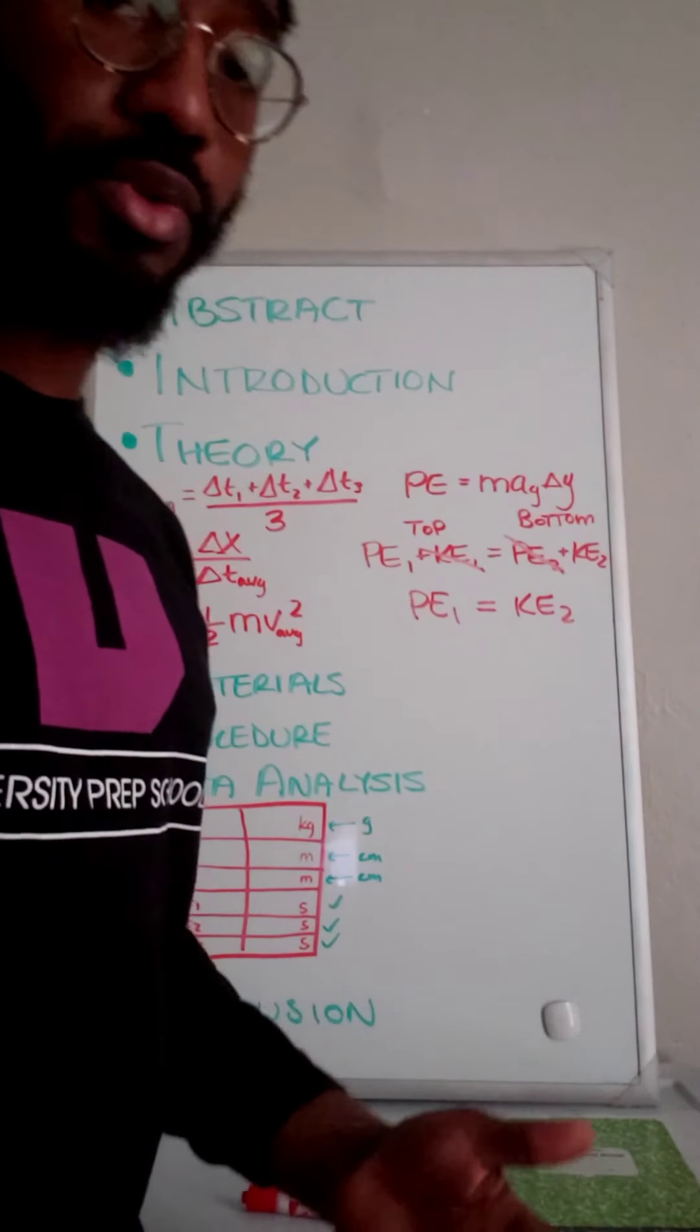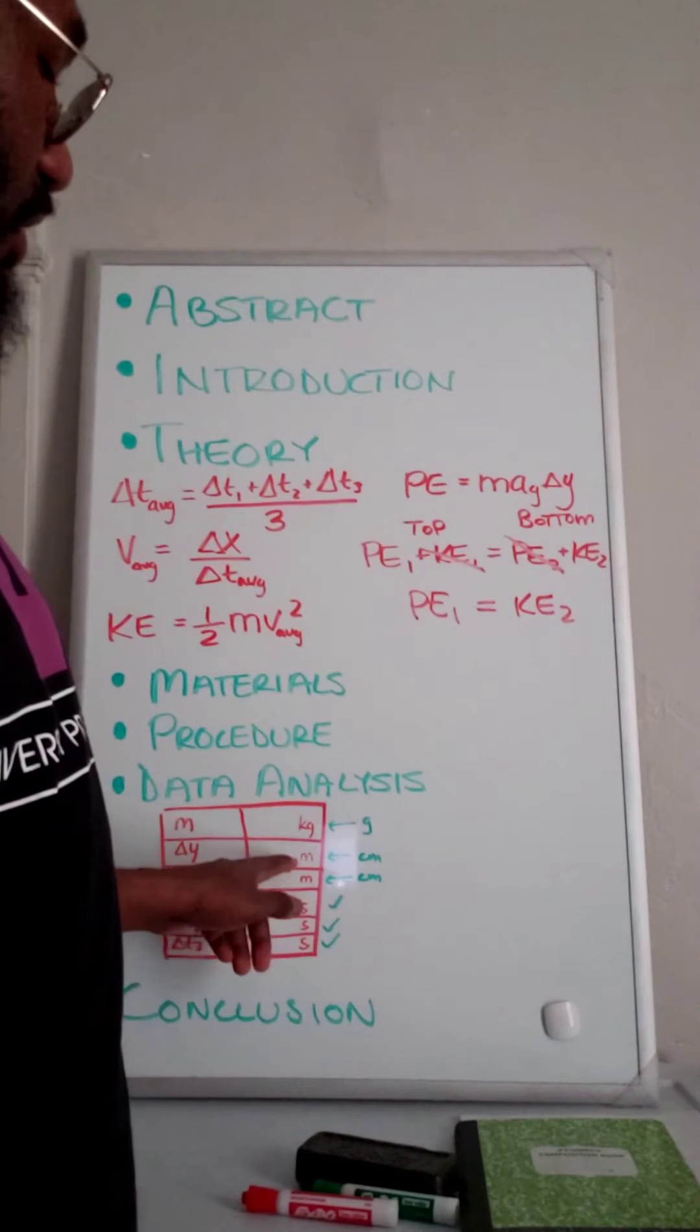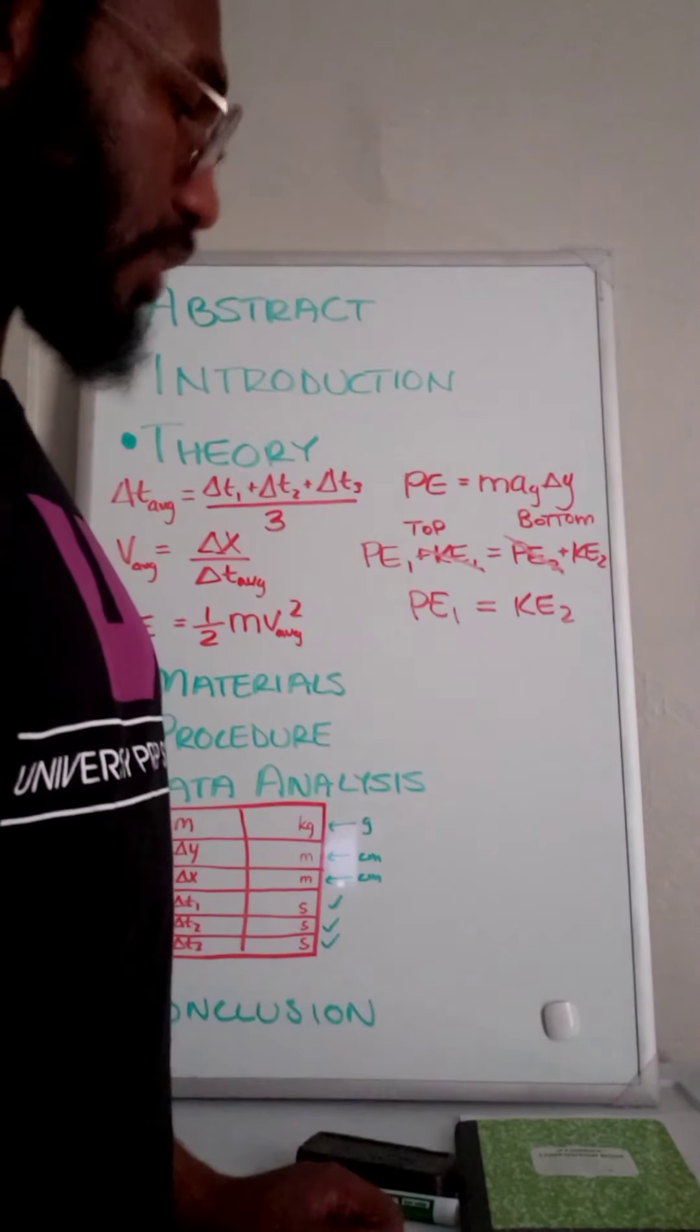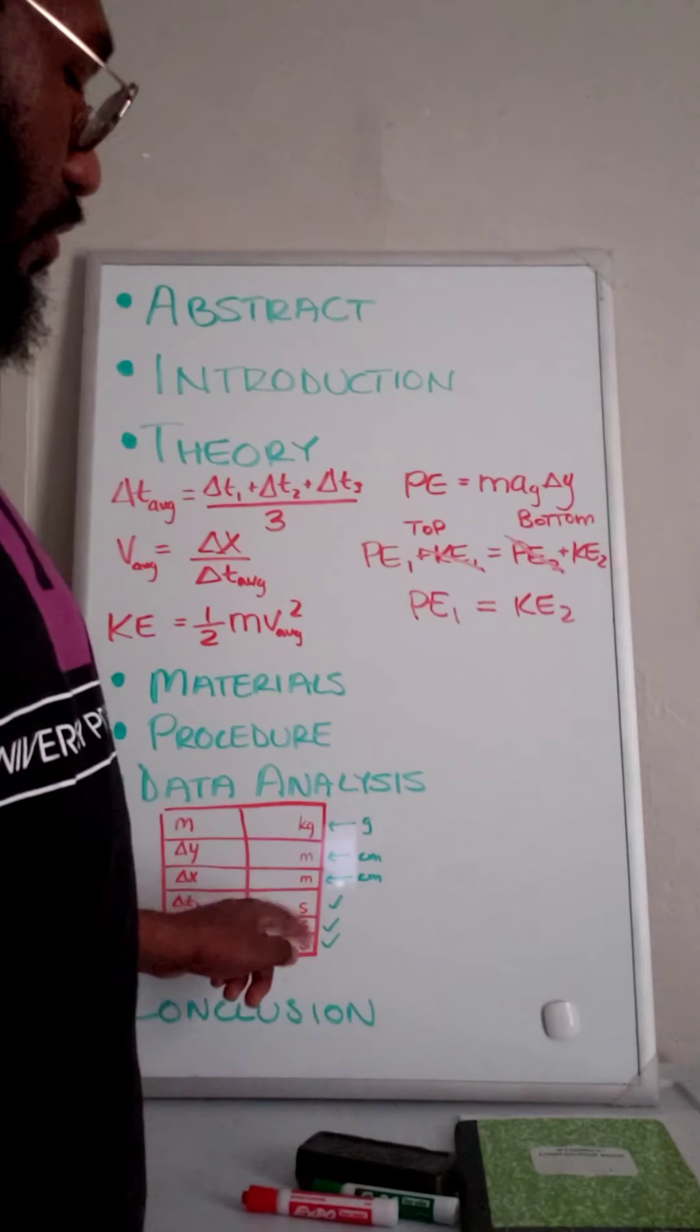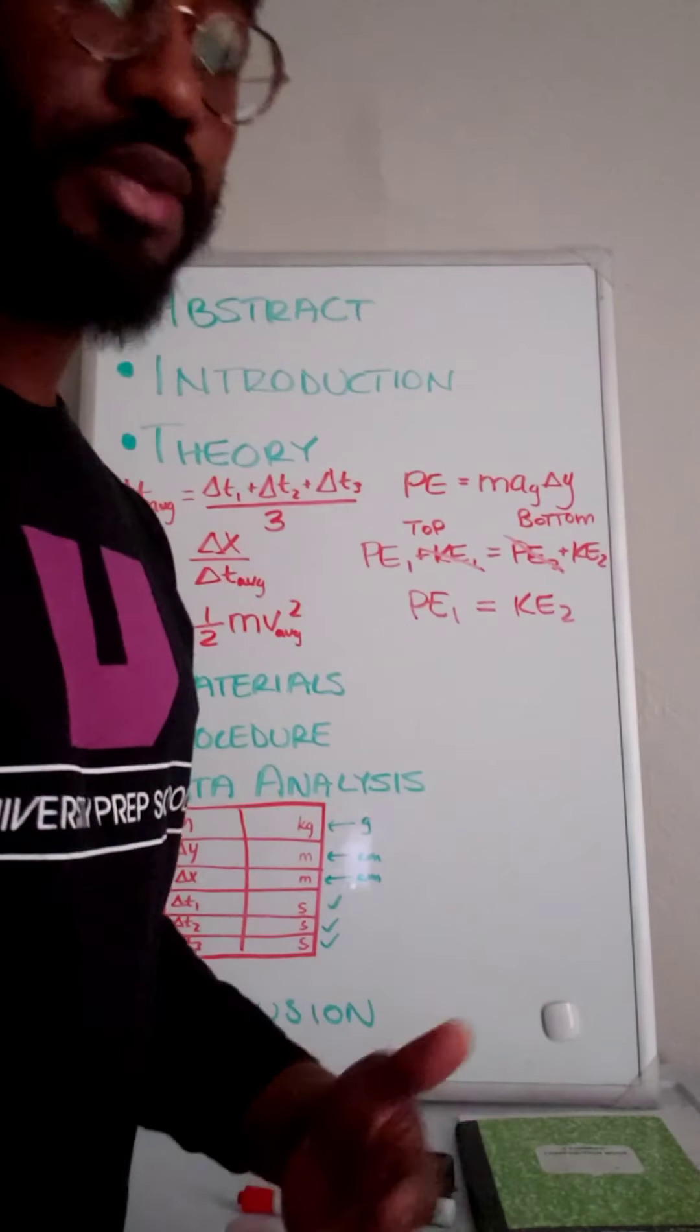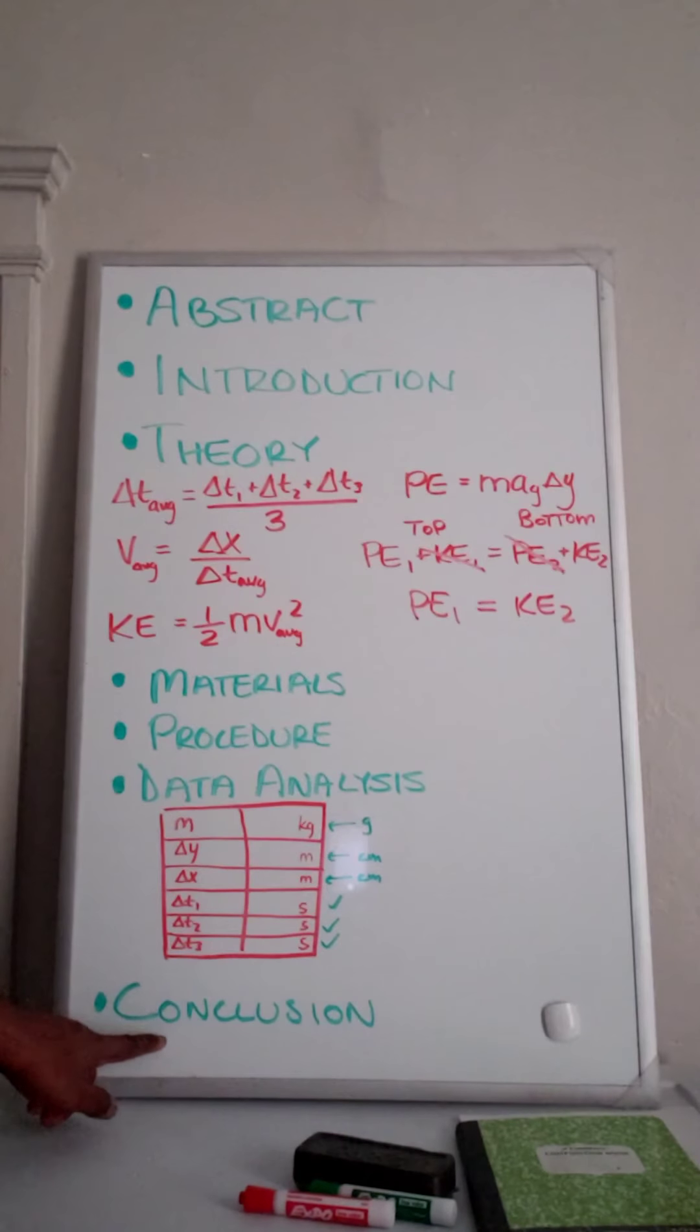You're going to have to convert that to meters. Again, you can do that online, that's fine. And then the three time trials you took were actually already in seconds, so you don't have to convert that.